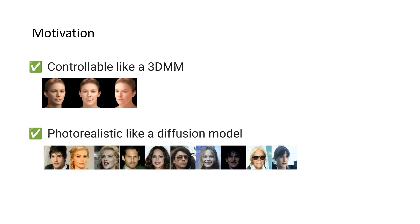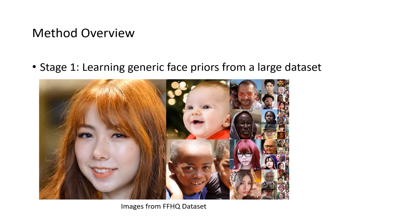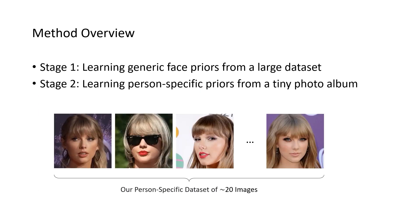In this paper, we get the best of both worlds by taking advantage of the controllability of 3DMMs and the photorealism of diffusion models. Our method consists of two stages. The first stage is to learn generic face priors from a large dataset such as FFHQ. After this stage, our diffusion model learns to map 3DMM Lambertian rendering into a photorealistic portrait image. Then, we learn person-specific priors from a tiny photo album of around 20 images. After this stage, our model has learned personalized priors tailored to this specific person.